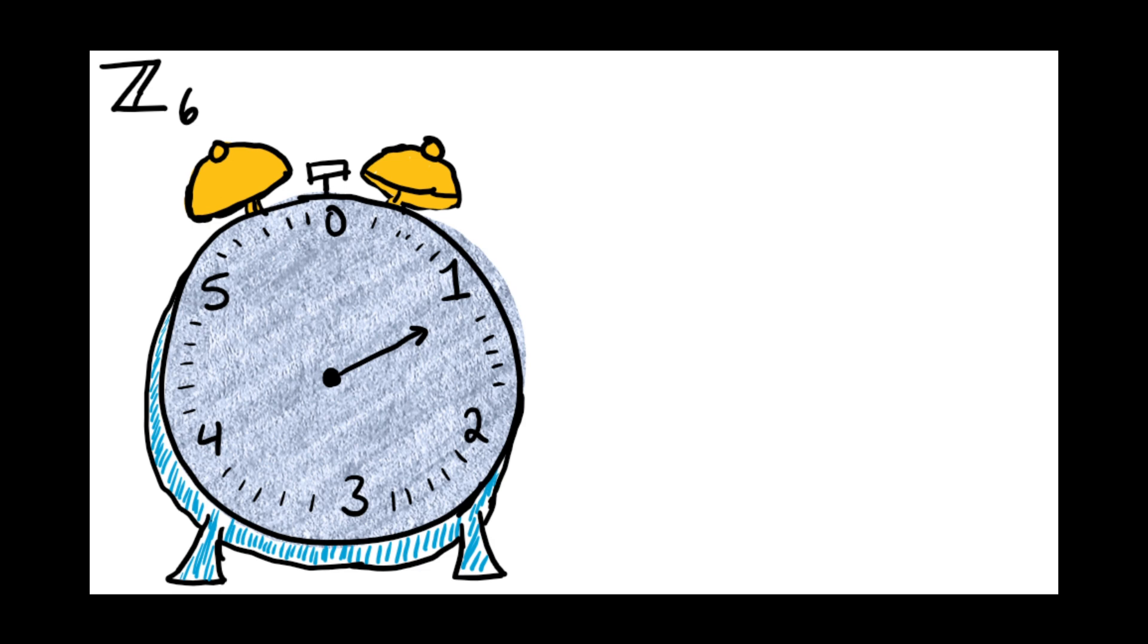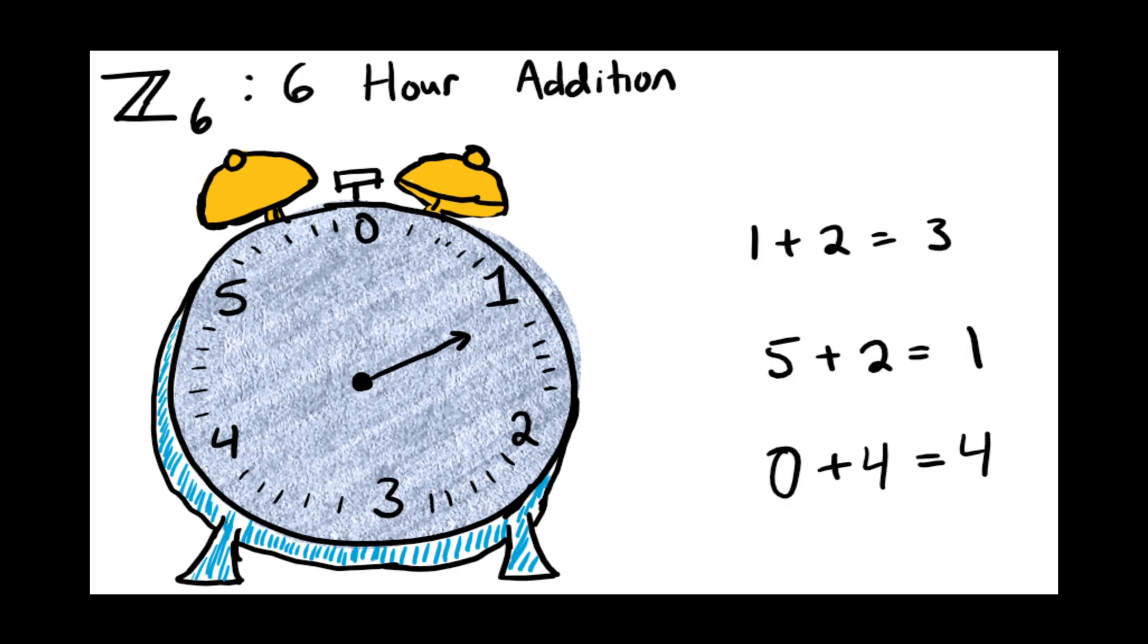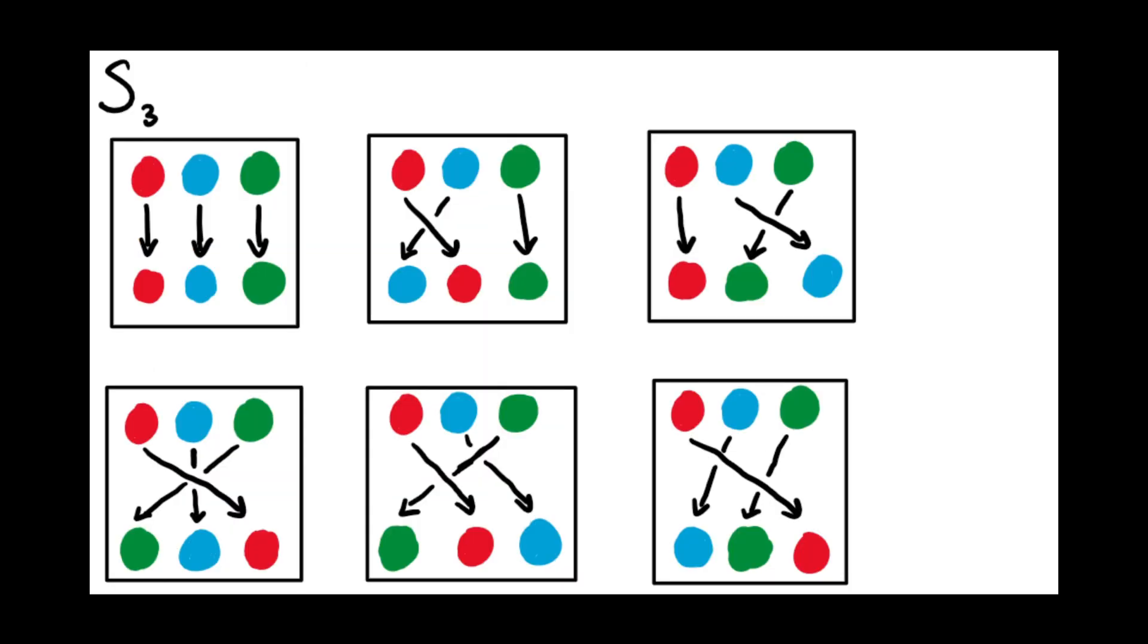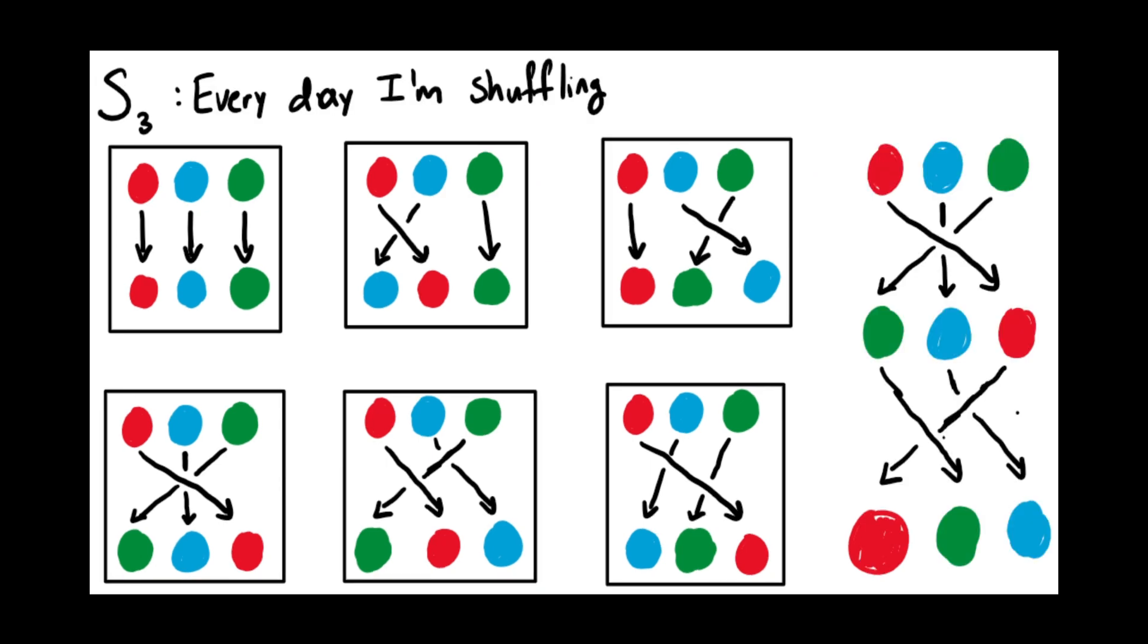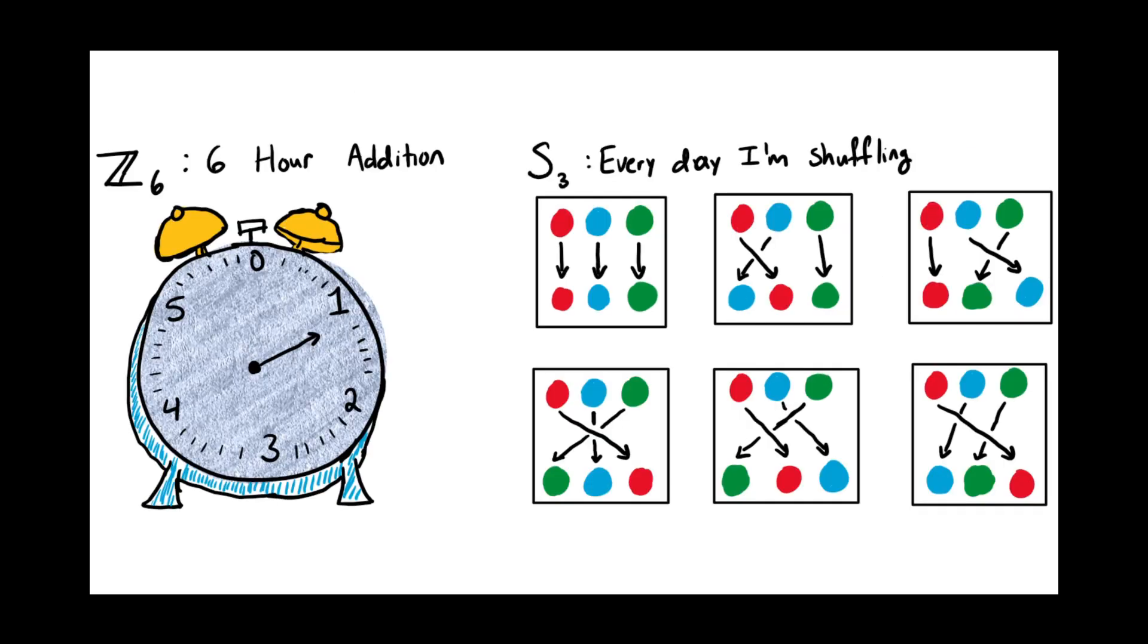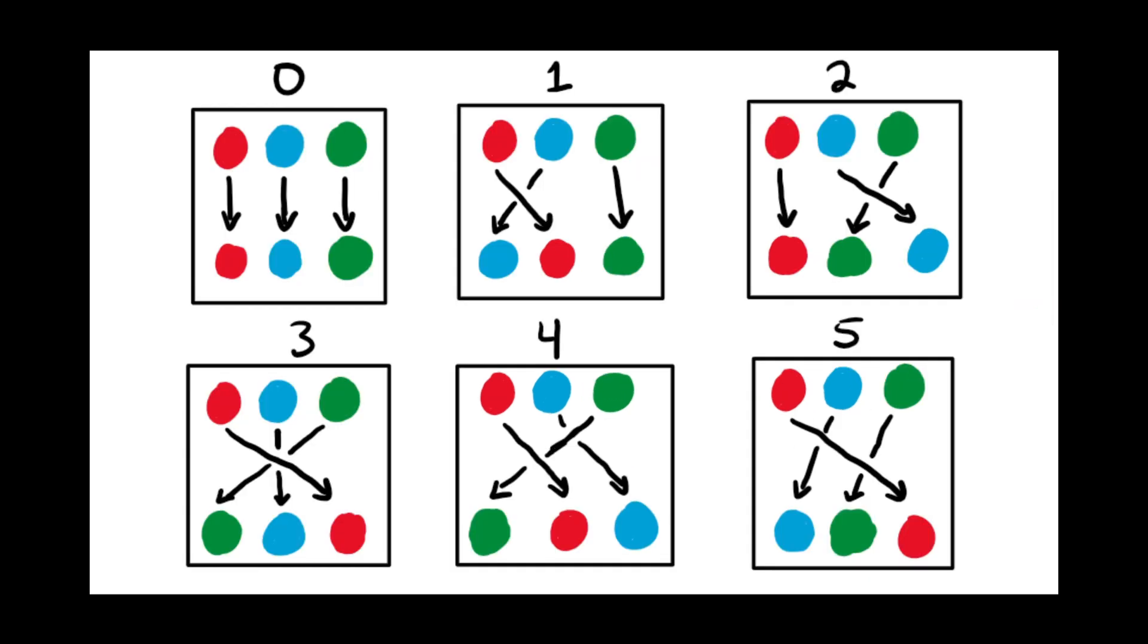Let's do an example. Consider the group Z6. This is just the numbers 0 through 5, where the operation is adding numbers as if you were on a 6 hour clock. And consider also the group S3, which is the set of all the ways you can shuffle three different things, and the operation is just doing one shuffle after the other. Both of these groups are made up of six things, so I can easily find a bijection between them. Let's say I paired them up like this.